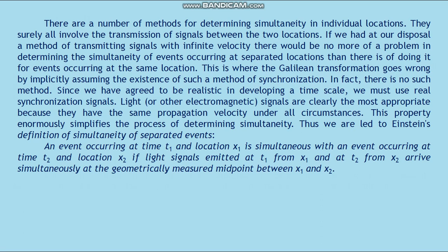There are a number of methods for determining simultaneity at individual locations, but they surely all involve the transmission of signals between the two locations. If one had at one's disposal a method of transmitting signals with infinite velocity, there would be no more problem in determining the simultaneity of events occurring at separated locations than there is for events occurring at the same location. This is where the Galilean transformation goes wrong — by implicitly assuming the existence of such methods of synchronization. In fact there is no such method. Since we have agreed to be realistic in developing a time scale, we must use real synchronization signals. Light or other electromagnetic signals are clearly the most appropriate because they have the same propagation velocity under all circumstances. This property enormously simplifies the process of determining simultaneity.